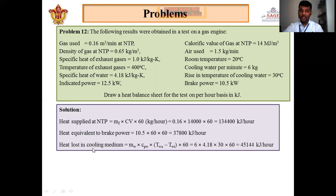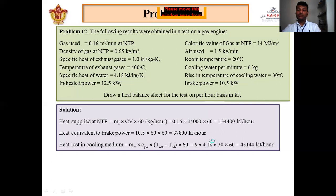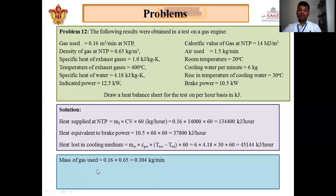Heat lost in the cooling medium: Q = m × Cp × ΔT. Mass flow of water m = 6 kg/min, Cp = 4.18 kJ/kg·K, rise in temperature ΔT = 30°C. This gives a result in kJ/min, which we multiply by 60 to convert to kJ/hour. The heat lost to the cooling medium is 45,144 kJ/hour.